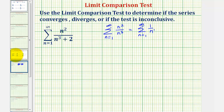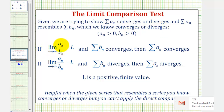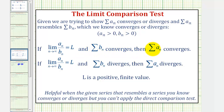To conduct the limit comparison test: if we're trying to show that the summation of a sub n converges or diverges, and a sub n resembles the summation of b sub n which we know converges or diverges, then if the limit as n approaches infinity of a sub n divided by b sub n equals L, where L is positive and finite, then if b sub n converges, so does a sub n. And if L is positive and finite and b sub n diverges, then the summation of a sub n also diverges.